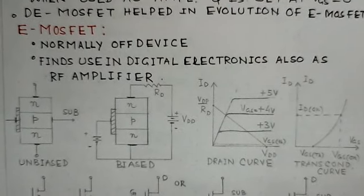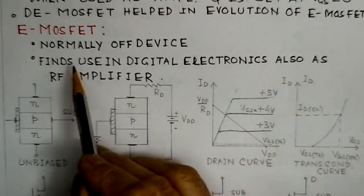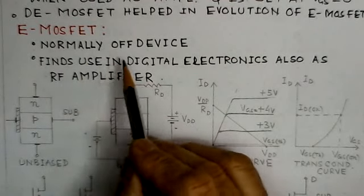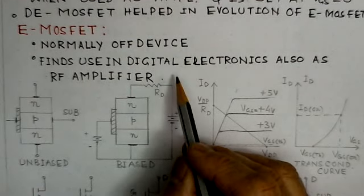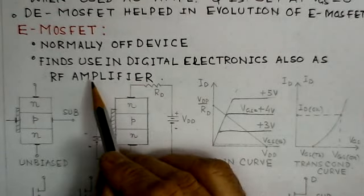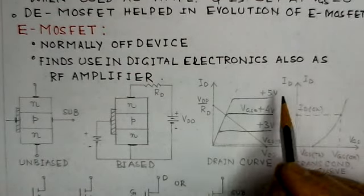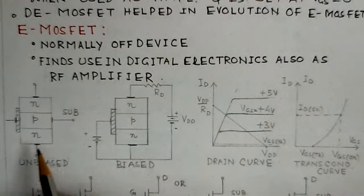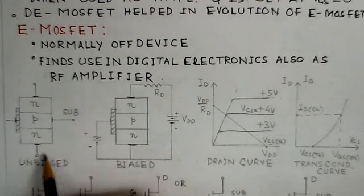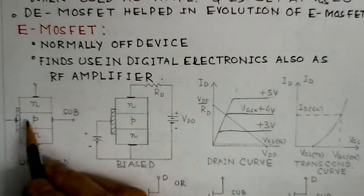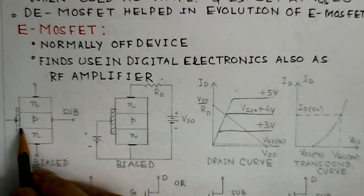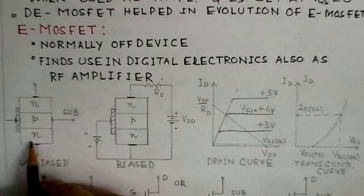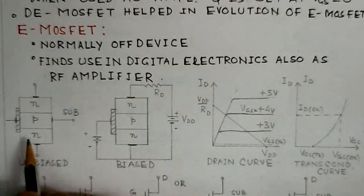The E-MOSFET is a normally-off device — if VGS is zero, the device is off. It finds use in digital electronics and also as an RF amplifier. In the E-MOSFET arrangement, the N-region is present and the P-region covers the entire region, so there is no channel initially. The channel is formed from one end to the other only when gate-to-source voltage exceeds the threshold, through the SiO2 insulating layer.